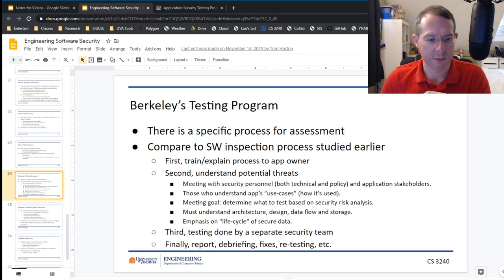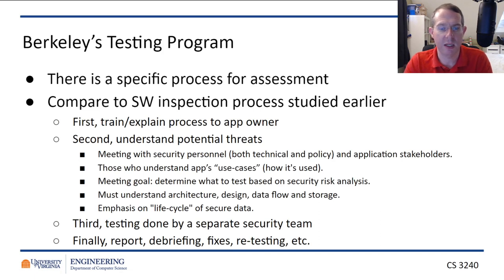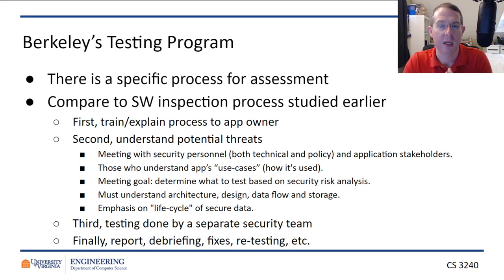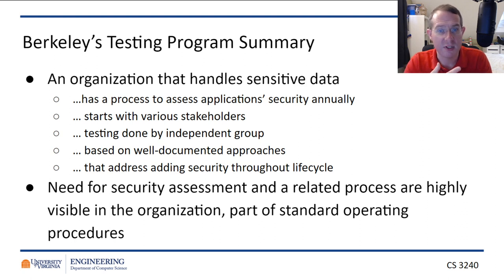Berkeley's testing program requires training people on the apps so they understand the potential threats. They meet with security personnel, get a briefing on how the system works, determine what the security risks are, and produce a final report. It's an audit — a thorough review to make sure everything still looks good. The organization handling sensitive data must have a process to assess security annually, starting with the stakeholders. Testing is done by an independent group to minimize bias, following well-documented approaches.